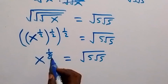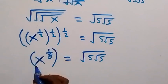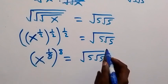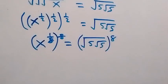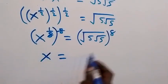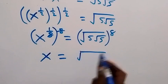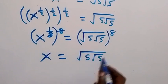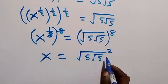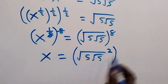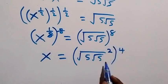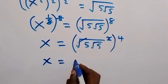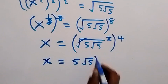Then we can remove the 1 over 8 by multiplying both powers by 8. When we multiply both powers by 8, the 8 cancels the 1 over 8, and we are left with just x. Then x equals — we can write the right side as root 5 times root 5, squared, then raised to the power 4. Since 2 times 4 gives us 8, the square affects the root here, and we are left with x equals 5 root 5 raised to the power 4.